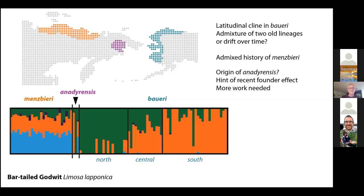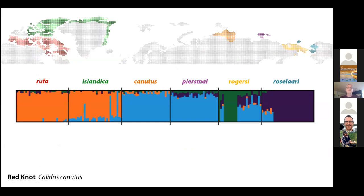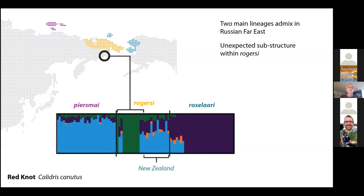This could be the effect of some recent founder event or some interesting patterns we have yet to unravel — more work is needed on anadyrensis. It's hard to get samples but we're trying. My last species, which is really complicated globally, is the red knot. This is a species with many described subspecies around the globe but has its highest subspecies diversity in this flyway, and again we see the most interesting patterns in the east.